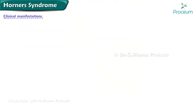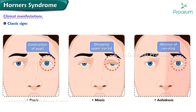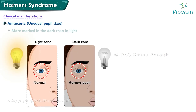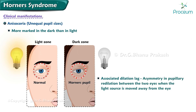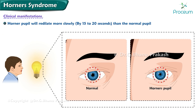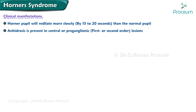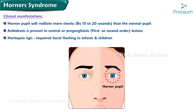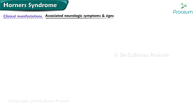The classic signs of Horner syndrome are ptosis, miosis, and anhydrosis. The degree of anisocoria is more marked in the dark than in light. There is associated dilation lag — an asymmetry in pupillary redilation between the two eyes when the light source is moved away; the Horner pupil will redilate more slowly by 15 to 20 seconds than the normal pupil. Anhydrosis is present in central or pre-ganglionic lesions, and in infants and children, impaired facial flushing is more often apparent than anhydrosis.